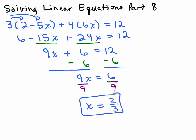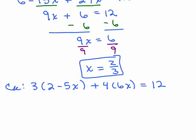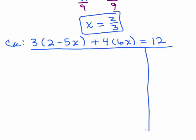So it looks like that's the answer. Now we have to check it, of course. Let's check and see if that's correct. On a regular piece of paper, you could do it right next to the same problem, but on this video I don't have enough space, so I'm going to do it underneath. Notice I have to copy the exact same problem as it started out, and I'm going to see when I plug in 2/3 if I get the same number on both sides. You underline the entire problem, go down from the equal sign with a bar, and then we're going to plug in 2/3 for x.